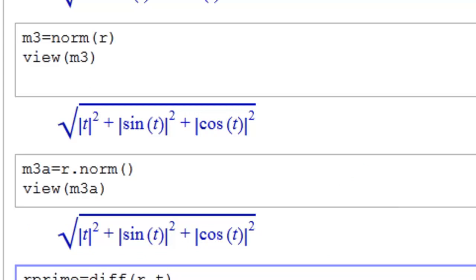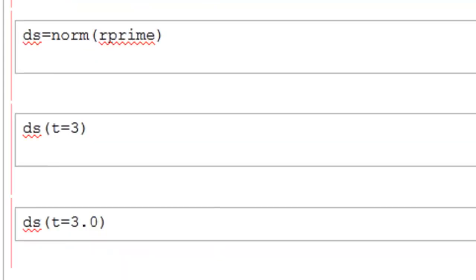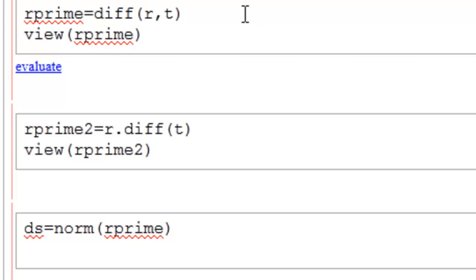Let's look at the derivative commands. Here is the standard SAGE notation for finding the derivative of a vector function. Now remember this will be a vector function itself, right? It will take derivatives of each of the components. So this is diff of R with respect to T. We'll put a view in it and evaluate it.